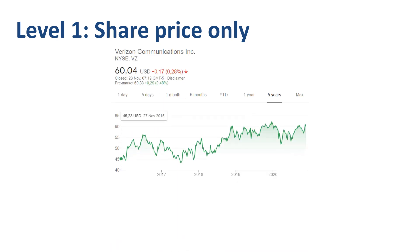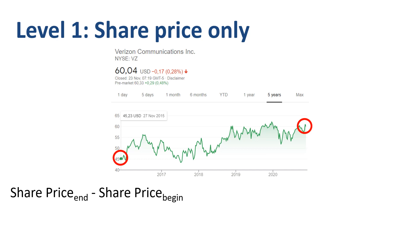I bought some shares in telecom company Verizon five years ago at $45 per share, which are currently trading for $60 per share. The return made on just the increase of the share price is the difference between the current share price and the share price at the time of purchase in the numerator, divided by the share price at the time of purchase in the denominator.